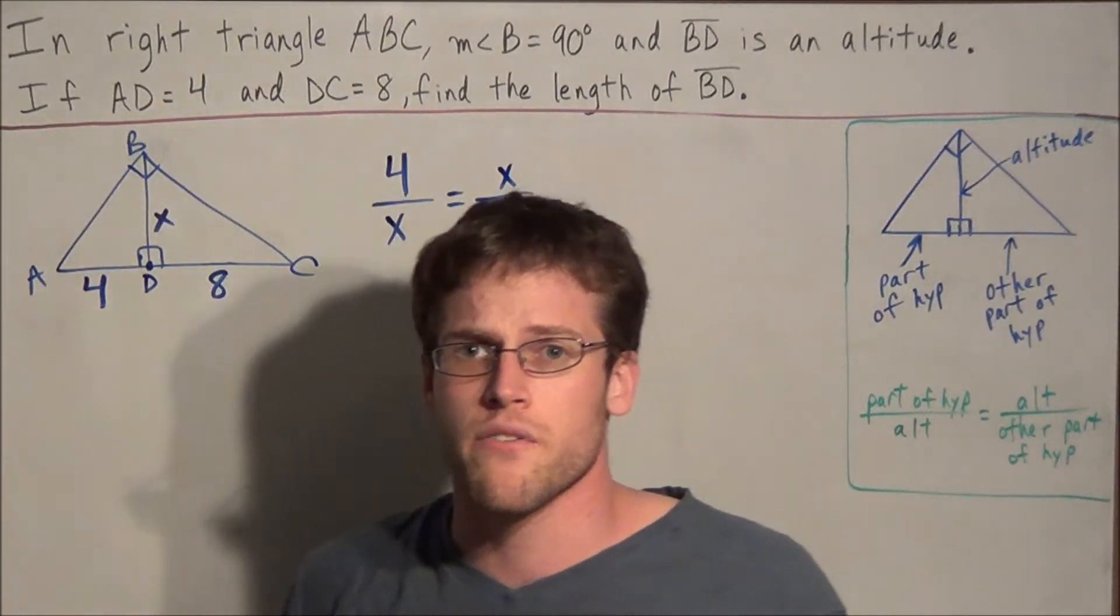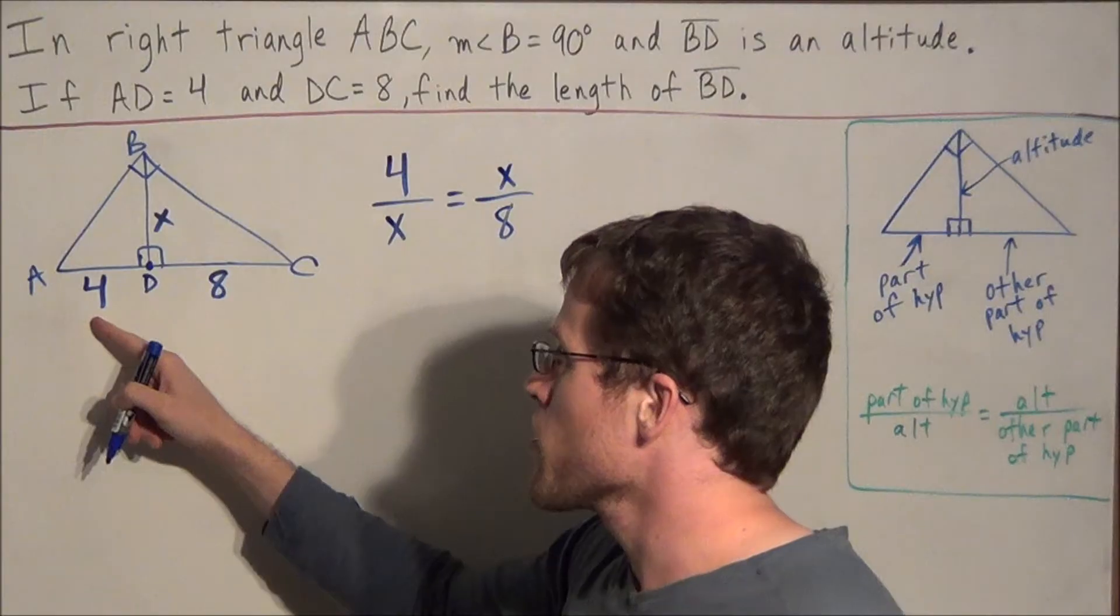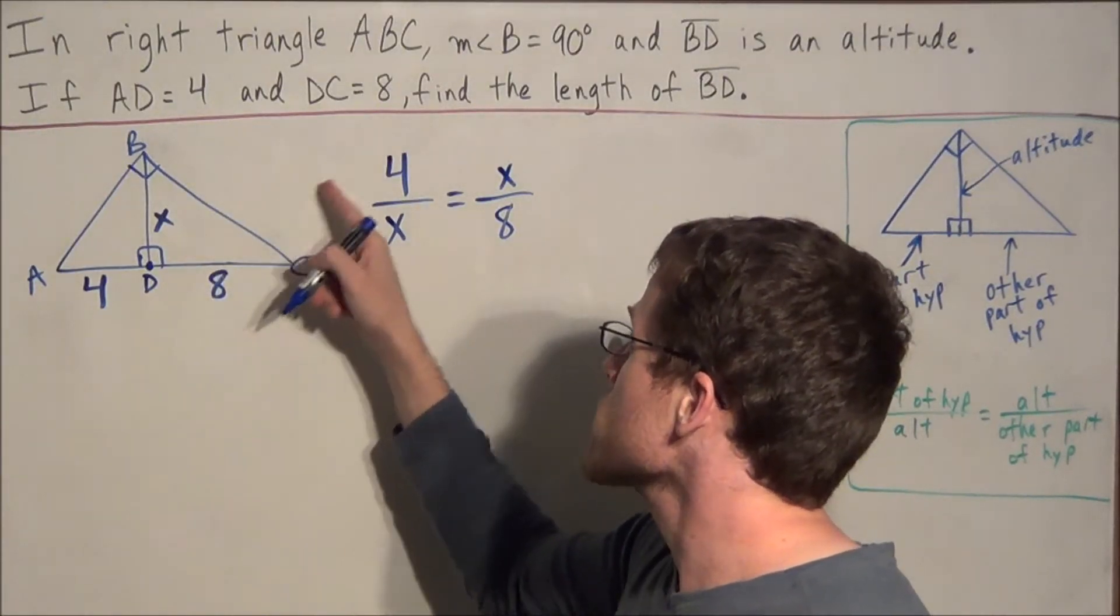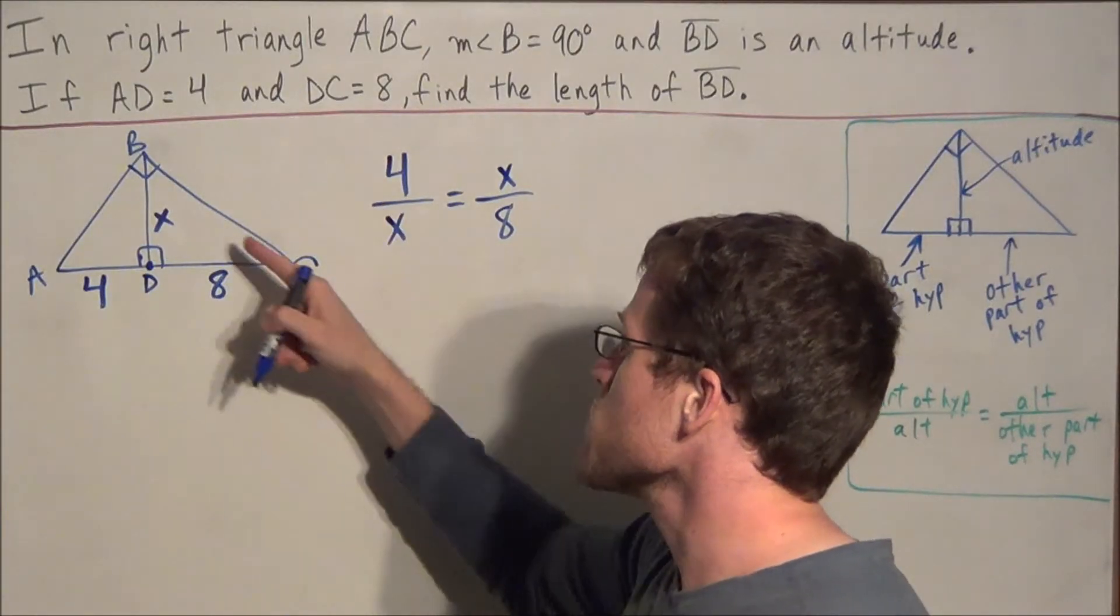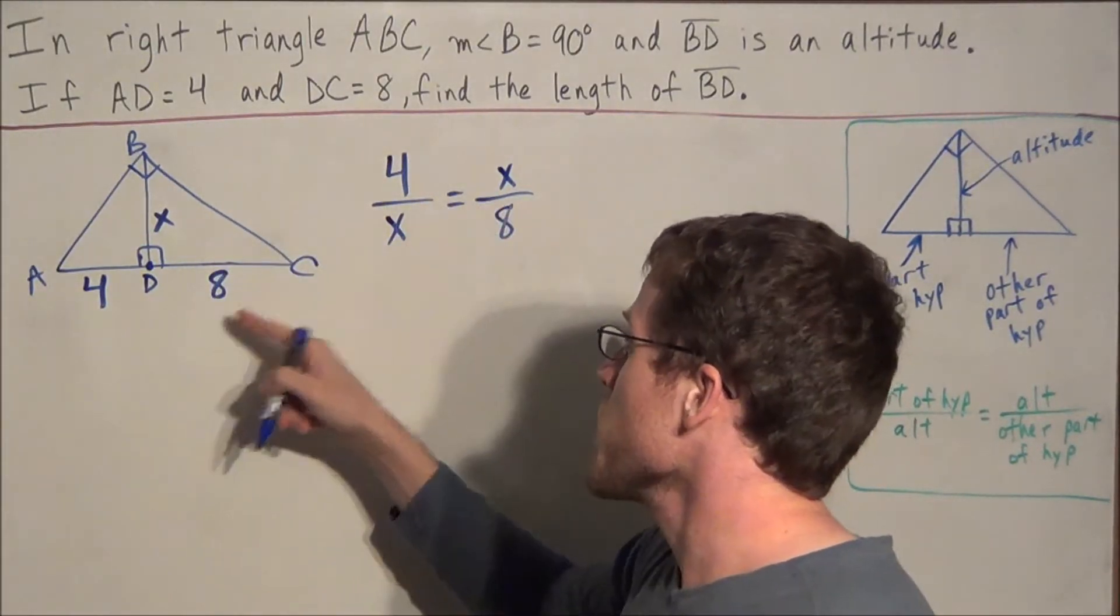Okay, so all we're doing is making a direct substitution. We have part of the hypotenuse over the altitude, so 4 over X, equals the altitude X over the other part.